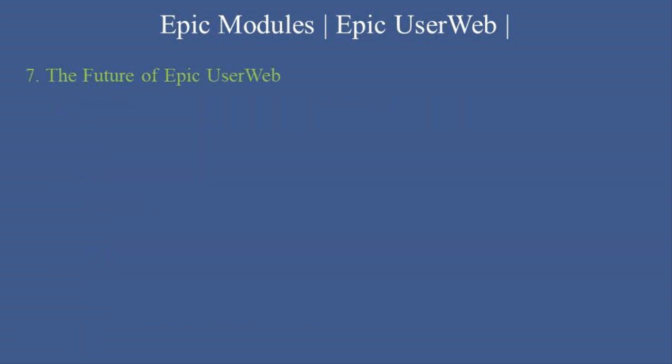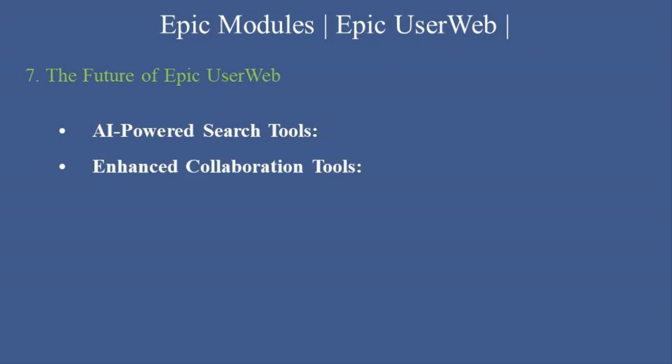The Future of Epic UserWeb: Epic is continuously enhancing UserWeb with features like AI-powered search tools to provide faster access to relevant resources, enhanced collaboration tools with improved forums and user groups for networking, and mobile optimization for better functionality when accessing resources on the go.